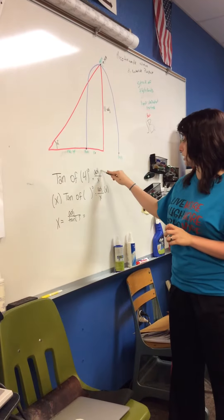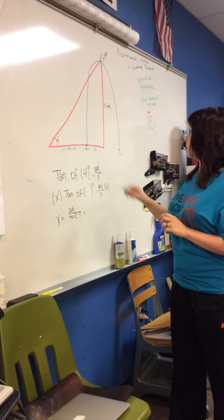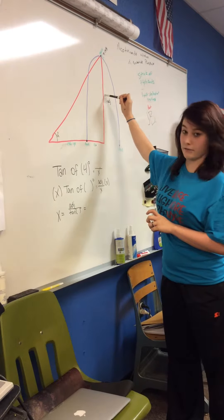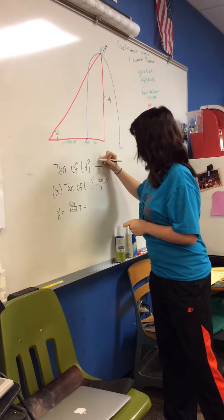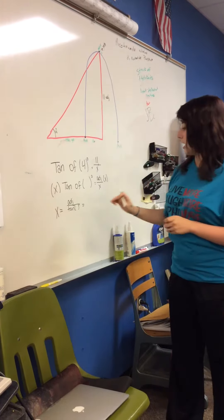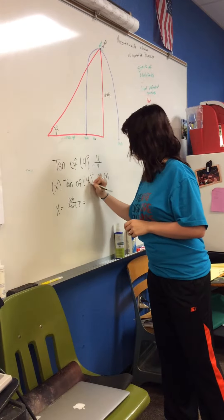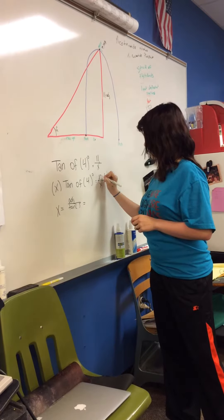And then we're going to put in adjacent over x. We don't know what x is yet, so we're going to take off this adjacent, and our adjacent is right here, which is 11. So we're going to put 11 over x, and then x times tangent of 4 degrees is your adjacent, which is 11.